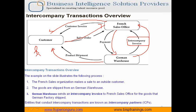In this example, the customer is an external entity and the transaction is happening between your two subsidiaries — French sales office and German warehouse. The entities which participate in this intercompany transaction are called intercompany partners or ICPs. There are three important keywords you should know: intercompany partners, intercompany invoice, and the accounts which participate during intercompany transactions.